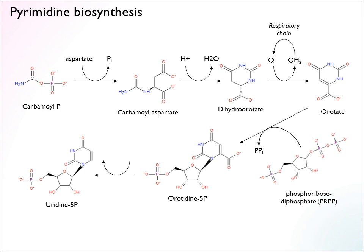Then there's a redox reaction where this particular carbon gets oxidized. This involves the respiratory chain — so you actually need a functional respiratory chain to be able to synthesize pyrimidines. Now we have something called orotate — already a pyrimidine base. Only at this step do we involve the sugar, the ribose, using the activated ribose form with the pyrophosphate group. This pyrophosphate is cleaved off to drive the reaction and form the bond attaching the sugar to the pyrimidine ring. Then there's a decarboxylation, and we arrive at uridine monophosphate.